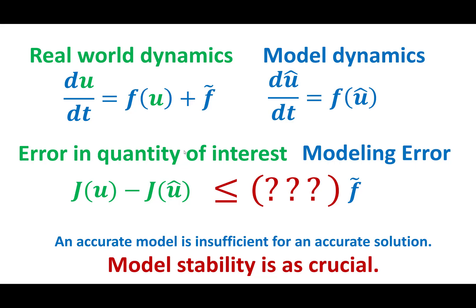For the balloon case we are interested in the finite-time trajectory. For the turbine engine case, because the melting of the turbine blade happens over many hours of running, we are interested in the statistics of the mixing dynamics. In either case, the stability of the model — which links the modeling error to the error in the quantity of interest — is as crucial as how large the modeling error is.